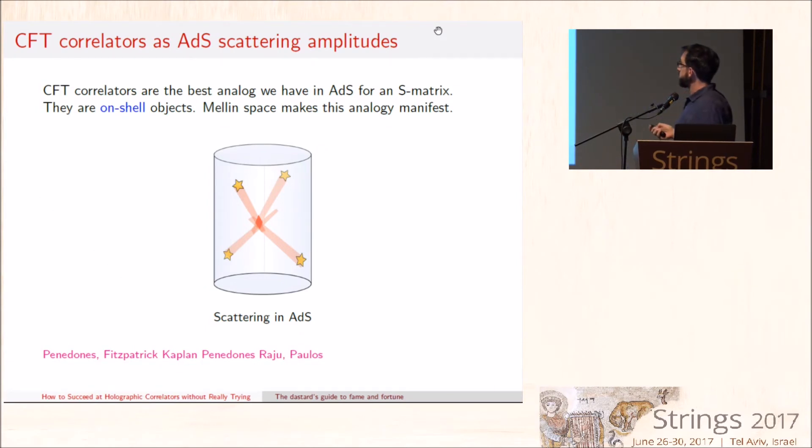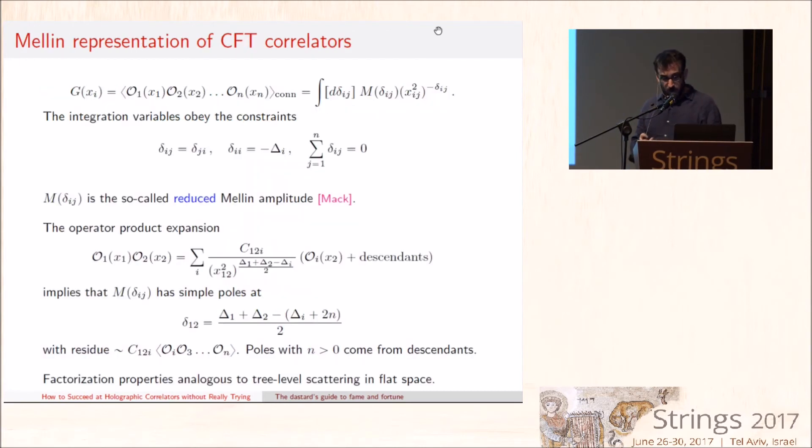And the appropriate language is the Mellin representation of conformal field theory correlators. The Mellin representation makes it transparent that if you're computing holographic boundary correlators in AdS, that is really the direct analog of the S-matrix in flat space. It's the natural on-shell observable.